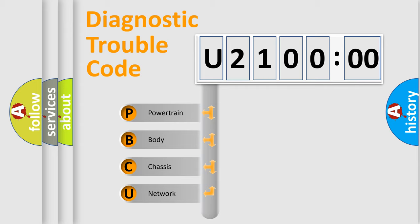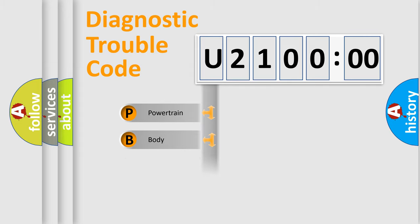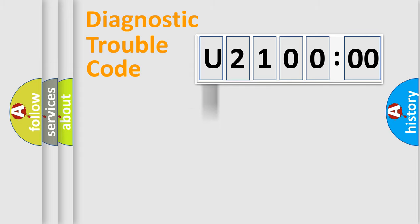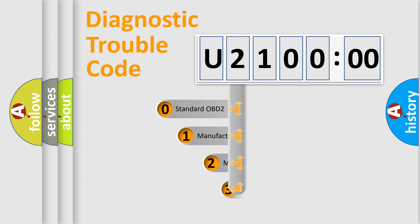We divide the electrical system of an automobile into four basic units: Powertrain, Body, Chassis, and Network. This distribution is defined in the first character of the code.